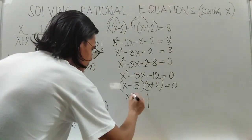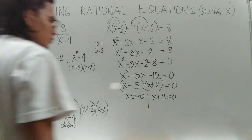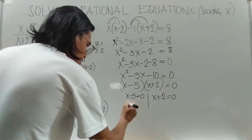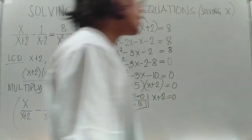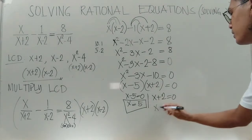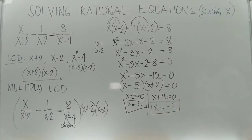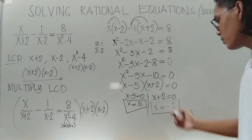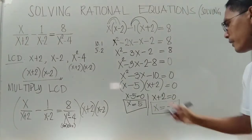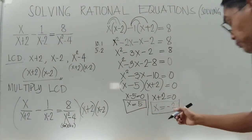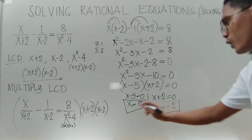Equate both factors to zero to solve for your roots and possible solutions. So we have x minus 5 equals 0, giving x equal to 5; and x plus 2 equals 0, giving x equal to negative 2. We have two possible solutions — two zeros for our equation, which are x equals 5 and x equals negative 2, also written as x sub 1 and x sub 2.